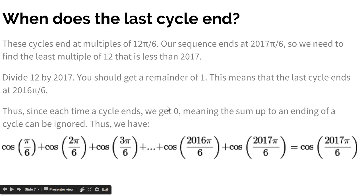Also, each time a cycle ends, the sum leading up to that end is 0. So the sum from cosine π/6 to 12π/6 is 0, since we just went through one cycle. From cosine π/6 to 24π/6, that's also 0, since we just went through two cycles, and that means we have two 0s. Cosine π/6 to cosine 36π/6, that's three cycles, three 0s, and that's still a cumulative sum of 0. So up until 2016π/6, the pattern continues, and cosine π/6 plus cosine 2π/6 plus cosine 3π/6 all the way up to cosine 2016π/6 is 0.